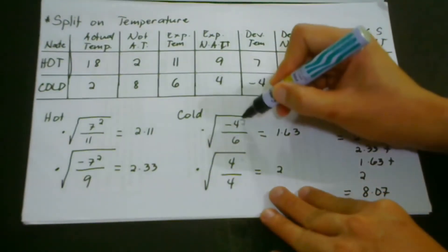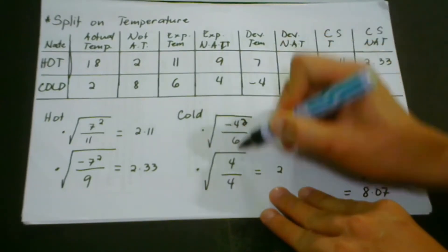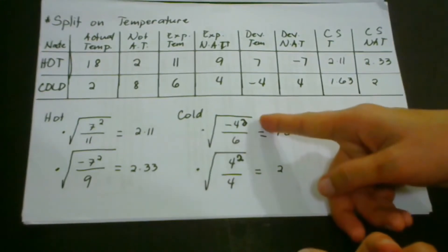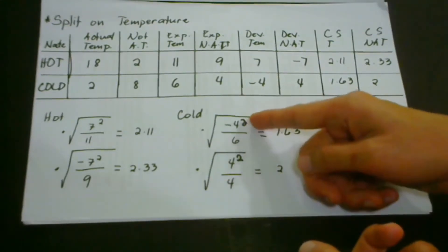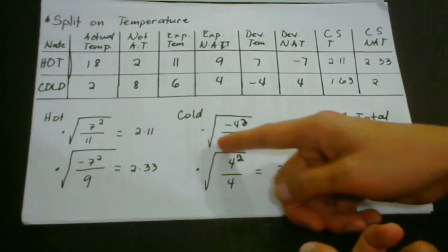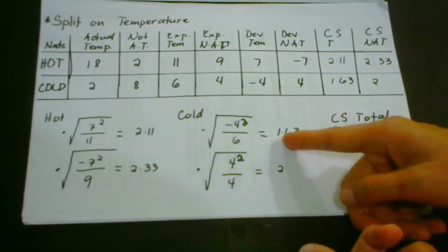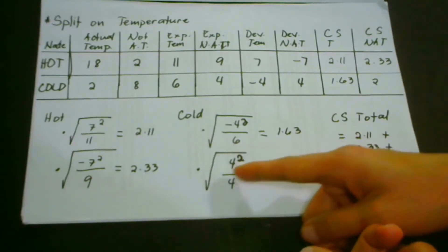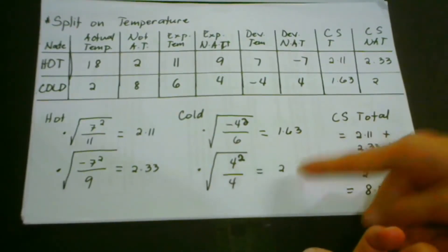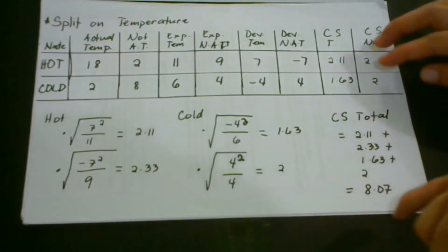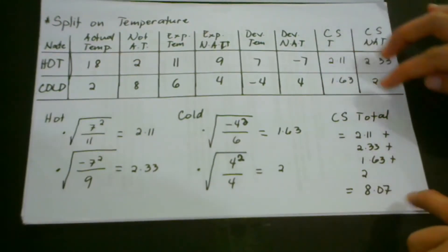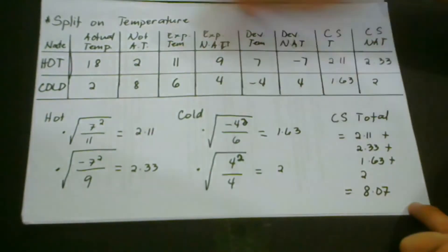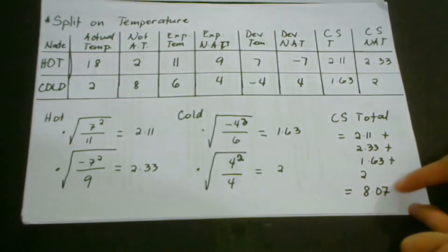All right, so this one is not clear, let's make this one clearer for you to see. Squared. This is squared, right? So negative four squared, that becomes sixteen divided by six, and we get the square root of that, then we have 1.63. Four times four, that is sixteen divided by four. Square root of four is two. And then after that, what we do here is we get the sum total of all of these values for the split on temperature, and we get 8.07, which means to say the chi-square of the split is 8.07.